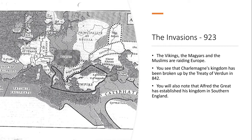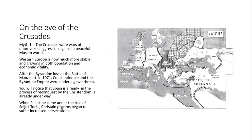By 1092 — just three years before the First Crusade — Western Europe has stabilized considerably. The kingdom of France, the German Empire, the kingdom of England, and the newly Christianized kingdoms of Norway and Sweden are all established. It's a much more stable world. And this brings us to the first major myth about the Crusades.